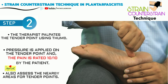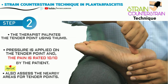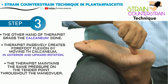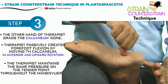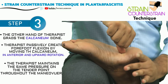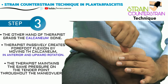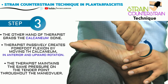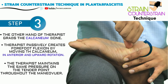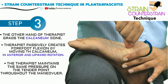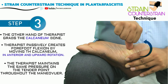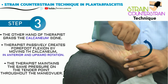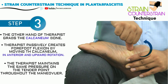The therapist palpates the tenderness over the recommended tender point and the pain experienced is rated as 10 out of 10. Using the other hand, the therapist cups around the patient's heel or calcaneum bone and then applies a forward and upward motion so as to create forefoot flexion, while maintaining the heel closer to the forefoot.